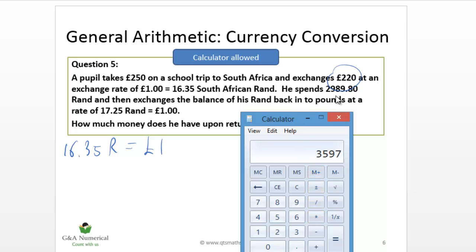We're told he spends this much rand. So that's 2,989.80, OK, that's a very exact amount. And that means he's left with 607.2 rand, OK, fine.